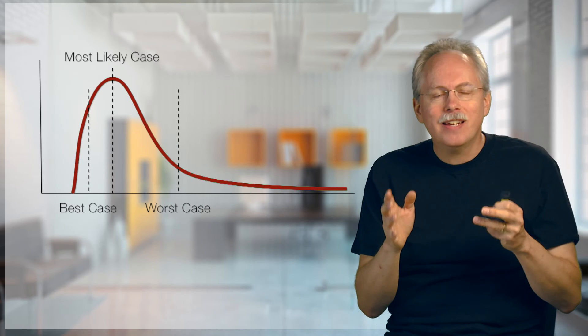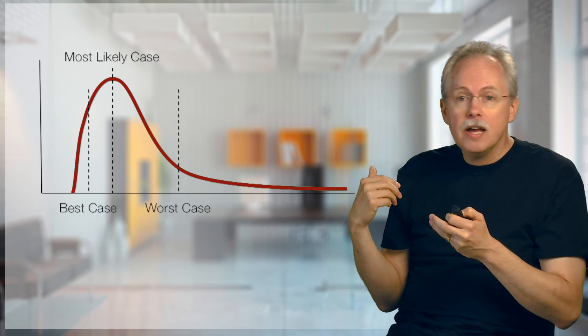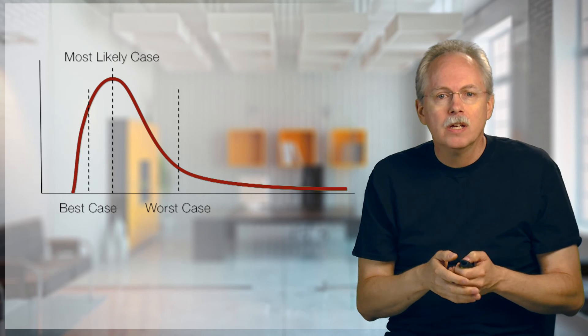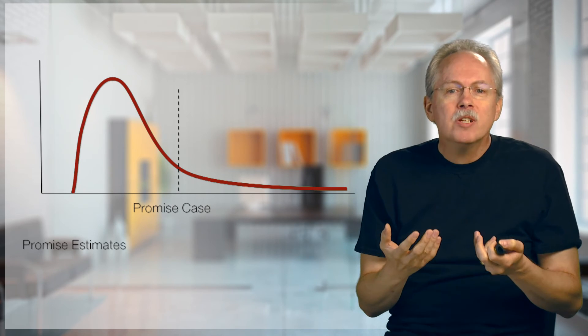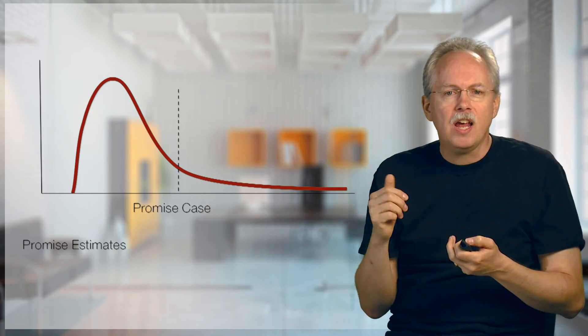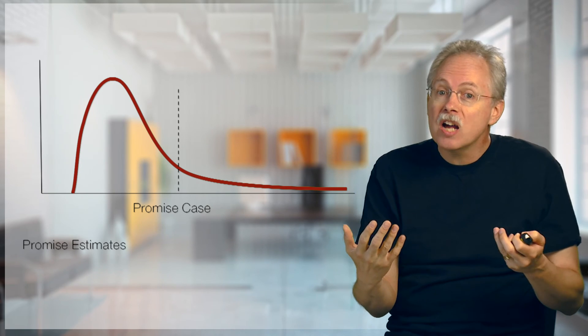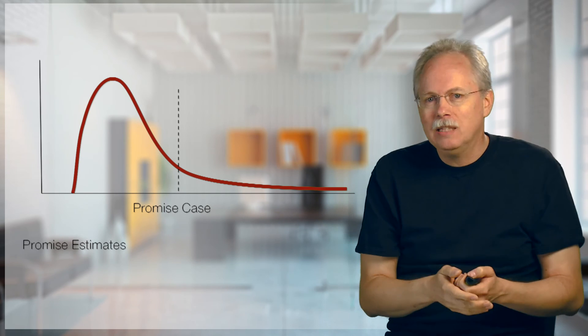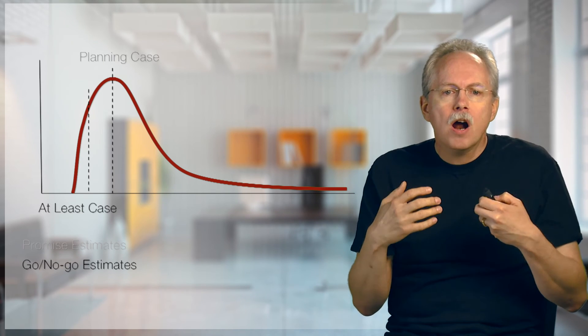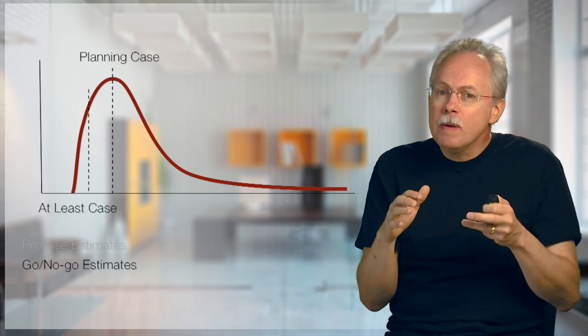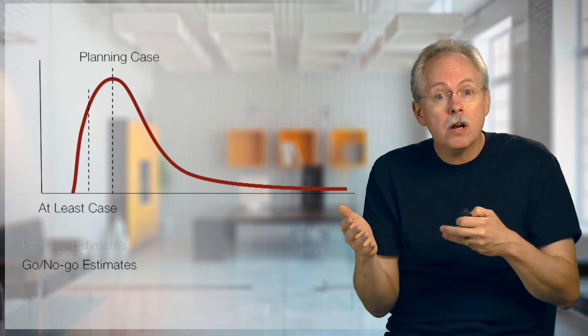So, what kind of estimate types do we have? Well, first we have our basic estimate here, with the long tail and the three points typically used on the estimate. For our promise estimates, we want to use the promise case. Something with high confidence, that we may have to delay further into the project to actually do, because the number may be too big at the beginning. For our go-no-go estimates, we tend to use the at least and the planning case, so people can make that decision whether it's worth going or not going.